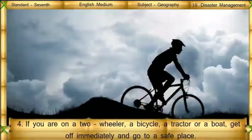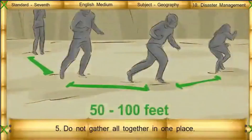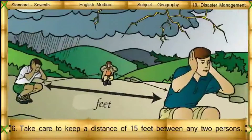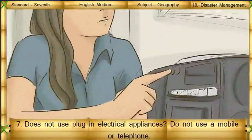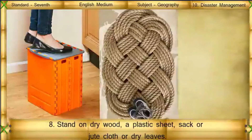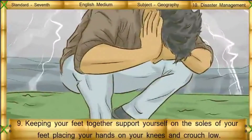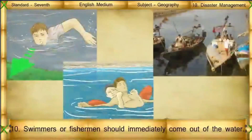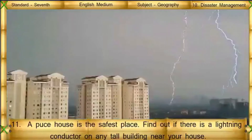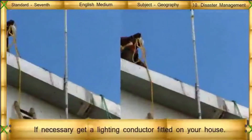If you are on a two-wheeler, a bicycle, a tractor, or a boat, get off immediately and go to a safe place. Do not gather all together in one place. Keep a distance of 15 feet between any two persons. Stand on dry wood, a plastic sheet, a sack, a jute cloth, or a dry leaf. Keeping your feet together, support yourself on the soles of your feet, placing your hands on your knees and crouch low. Find out if there is a lightning conductor on any tall building near your house. If necessary, get a lightning conductor fitted on your house.